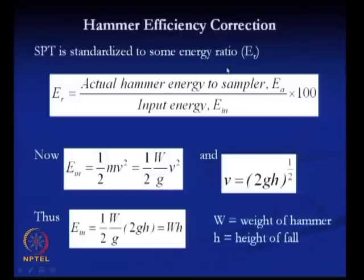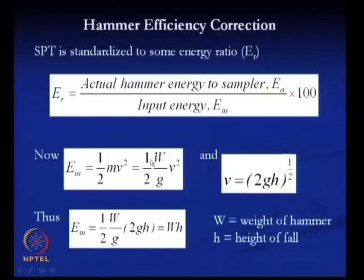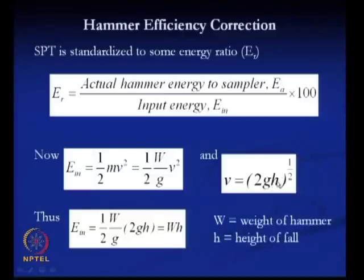The energy ratio is the ratio between the actual hammer energy to the sampler (Ea) and the input energy (Ei), expressed as a percentage. The input energy can be calculated as half times m times v squared, where m is the mass and v is the velocity of the hammer — equivalently written as (W/g) × v²/2, where W is the weight and g is gravitational acceleration. The velocity v equals the square root of 2gh, where h is the height of free fall. Ultimately, the input energy equals the weight of the hammer times the height of free fall.